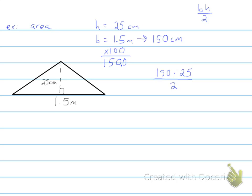If we were to work this out, we would get times 25, we get 3,750, and then we divide that by 2. Yes, there are more steps with doing this, but it is important that you have the same units. That way you can actually solve these.